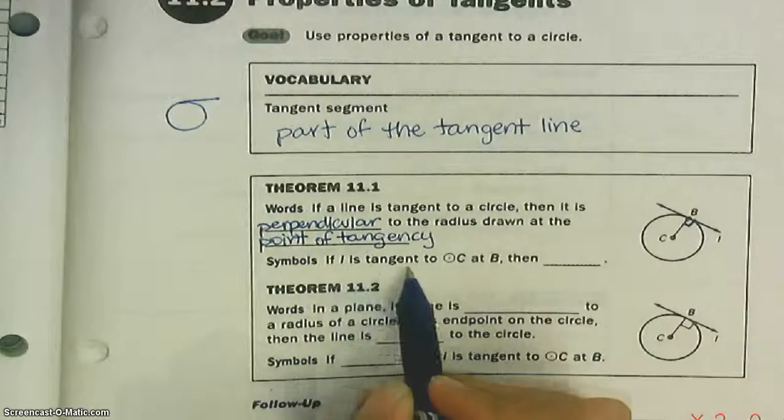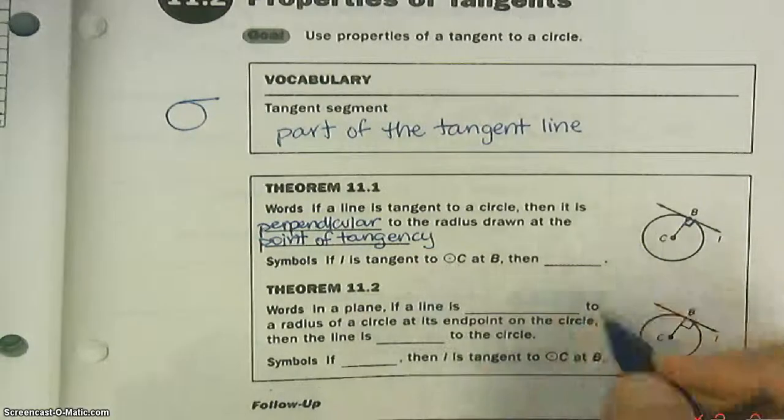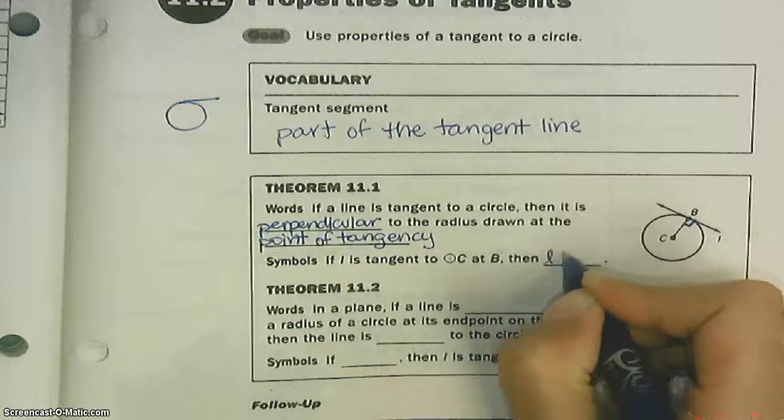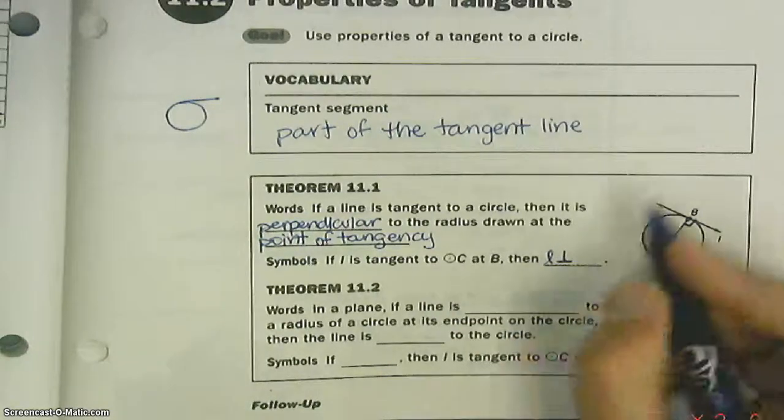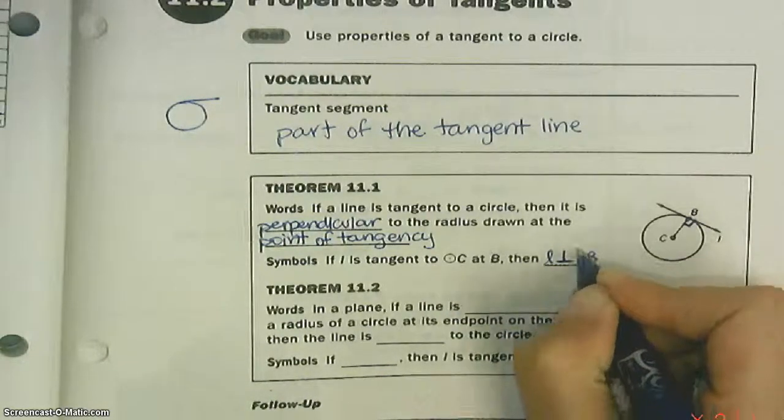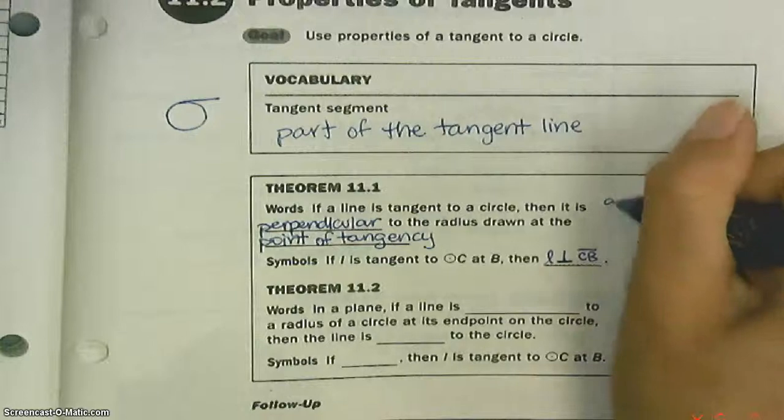If L is tangent to circle C at B, then L is perpendicular to CB. Remember, perpendicular means 90 degrees.